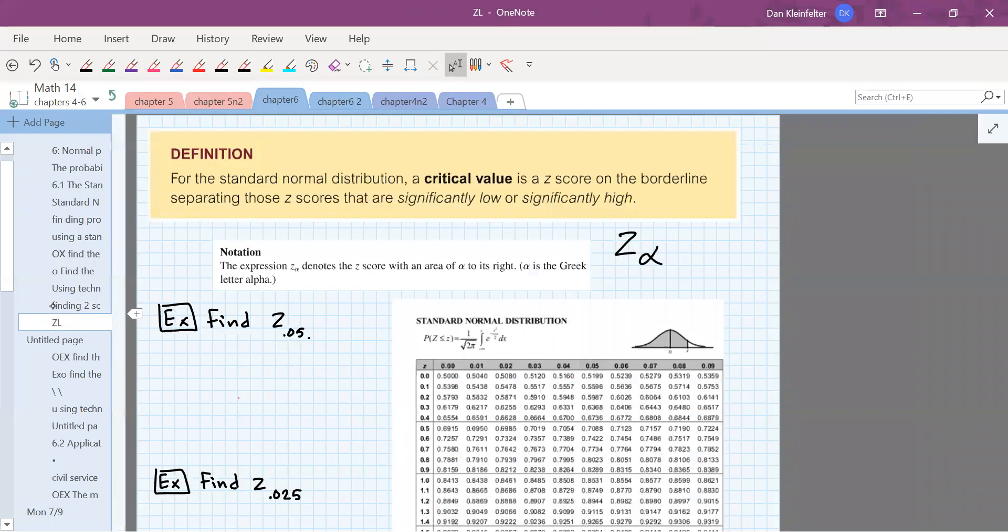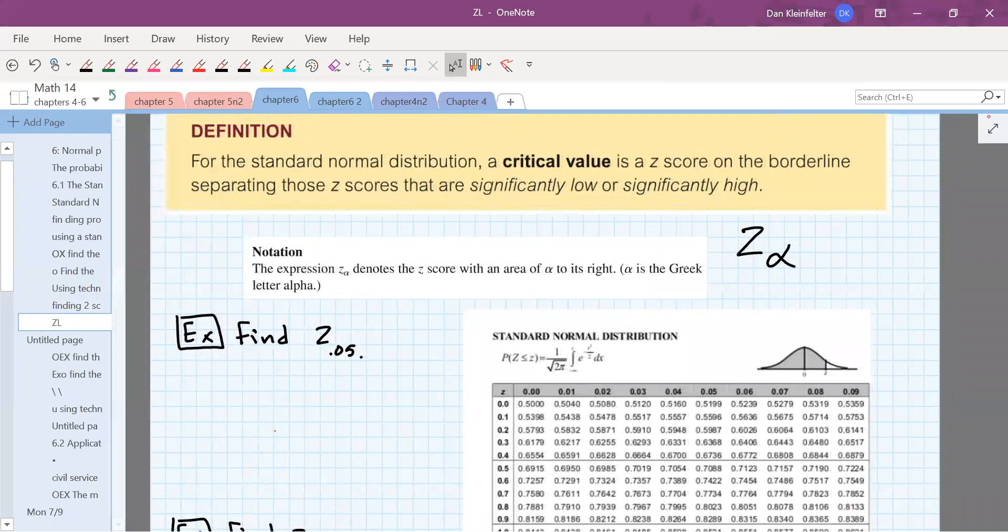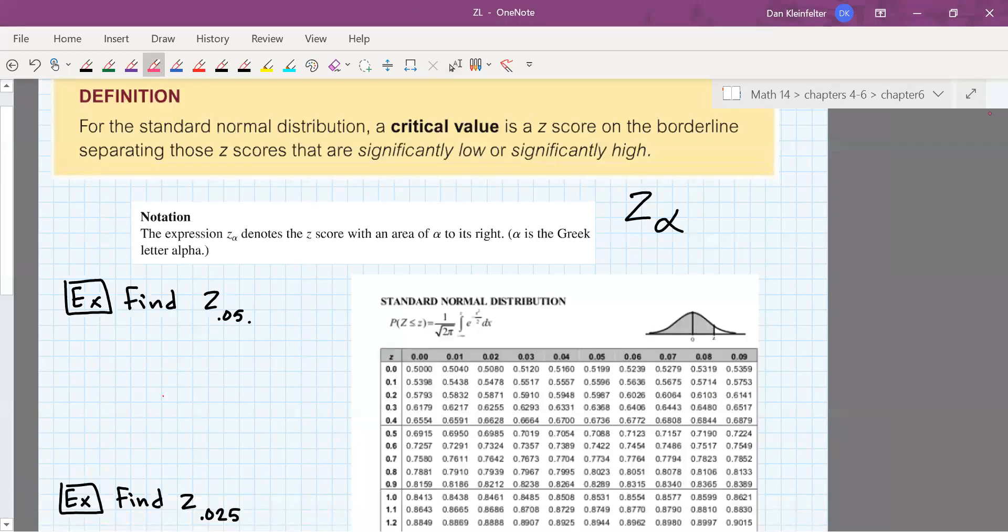All right. Next, we want to define the idea of what a critical value is. For the standard normal distribution, a critical value is a z-score. So first of all, it's a z-value. It's a z-score on the borderline separating z-scores that are significantly low or significantly high.